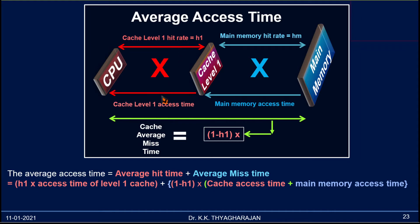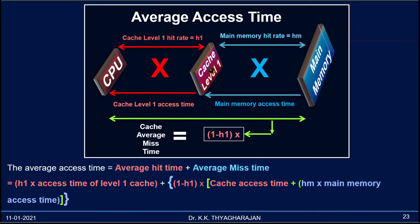When there is a hit, the average access time will be equal to multiplying H1 by the cache access time. When the data is not available in the cache, the average miss time will be equal to multiplying the hit rate by the access time and adding the total value with the main memory access time. So the average access time equals average hit time plus average miss time. The average hit time is H1 multiplied by Level 1 cache access time, plus the average miss time, which is (1 minus H1) multiplied by the cache Level 1 access time plus Hm multiplied by main memory access time.